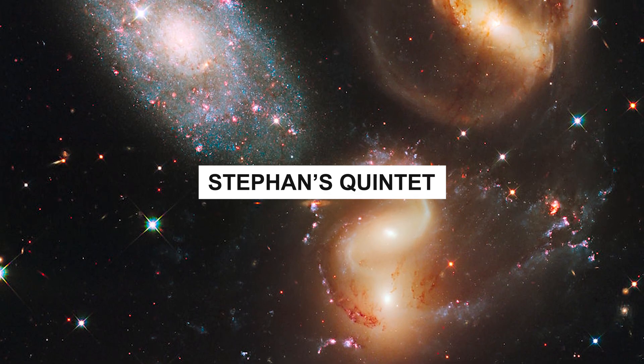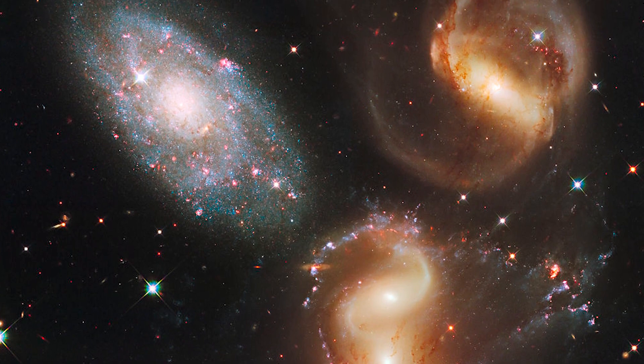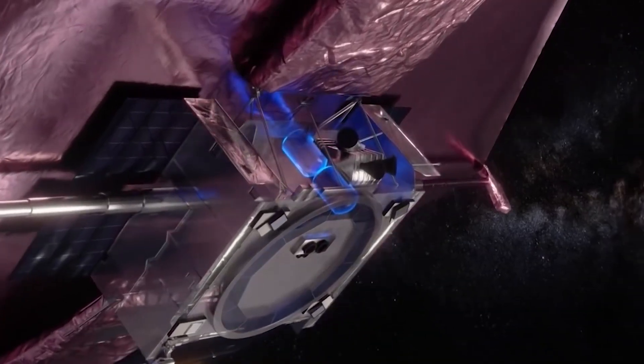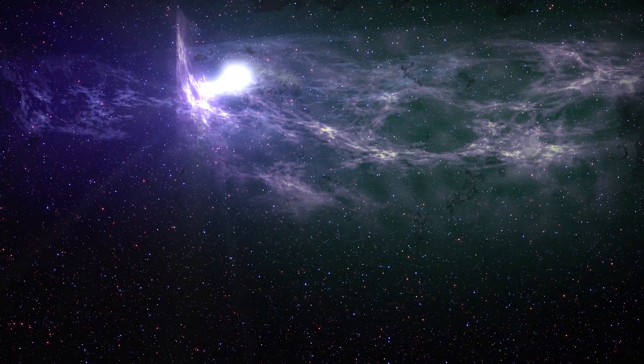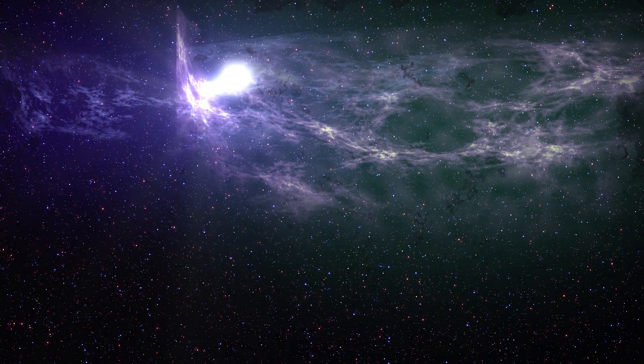Image of Stefan's Quintet. NASA's most recent photograph, taken with the Webb Telescope, shows Stefan's Quintet, a collection of five galaxies situated 290 million light-years away.